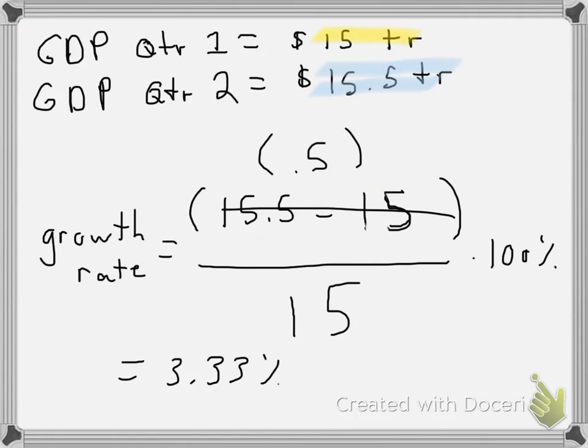In other words, our economy grew at an increase rate of 3.3% from quarter 1 to quarter 2 in this example. Now this can tell us a whole lot.